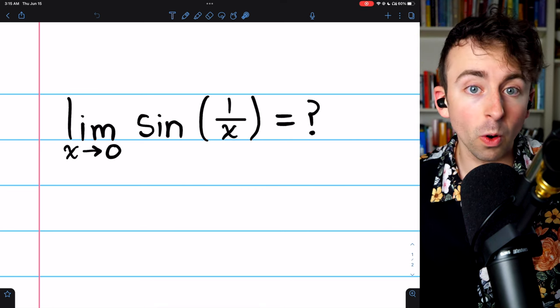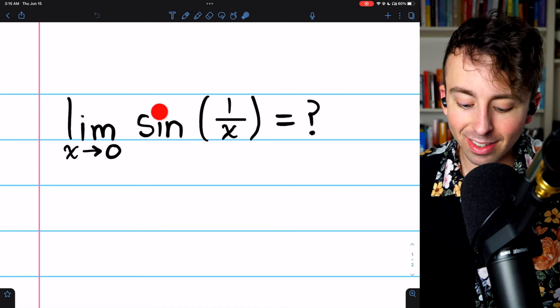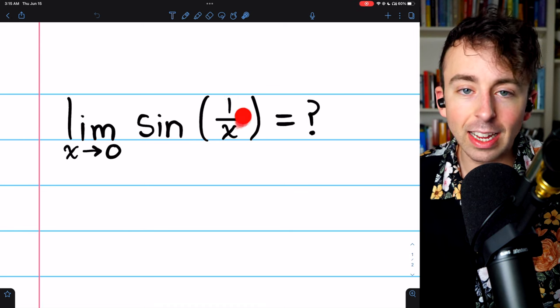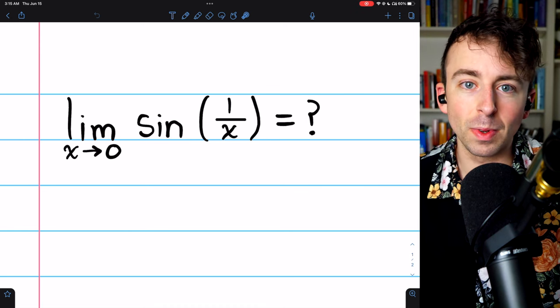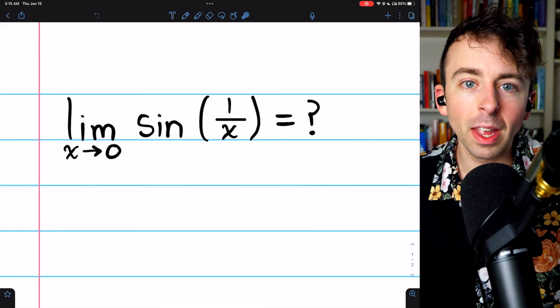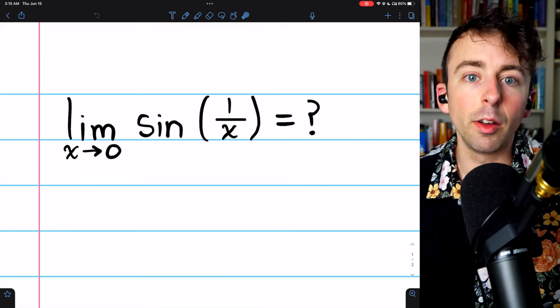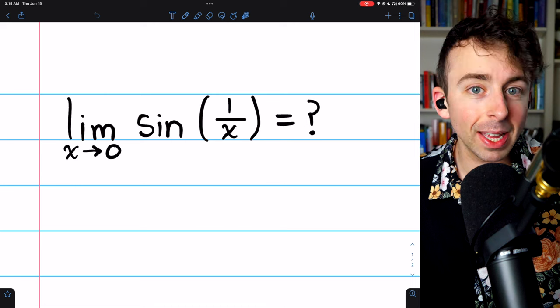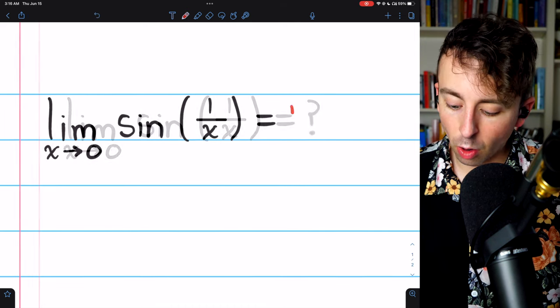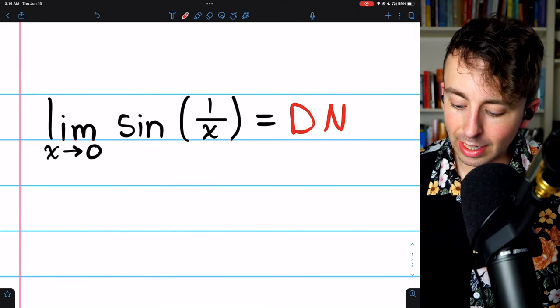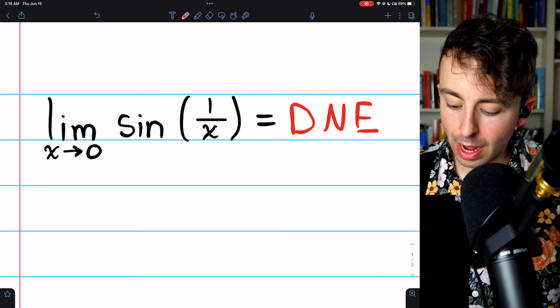extreme in the positive direction or in the negative direction, which means sine of this inside function, which is just becoming more and more extreme, is going to be oscillating very rapidly. The limit does not exist. So we can reach this conclusion that the limit doesn't exist just by thinking about it.